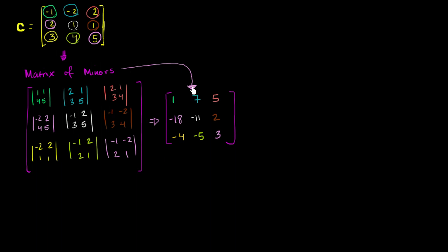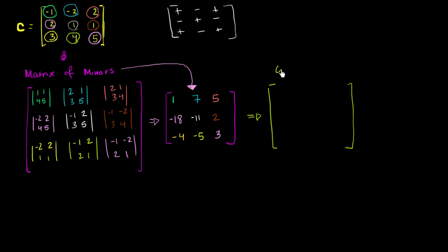That's our matrix of minors. From there we get our cofactor matrix by applying a checkerboard sign pattern: positive, negative, positive, negative, positive, negative, positive, negative, positive. Applying these signs: 1 stays positive 1; 7 becomes negative 7; 5 stays positive 5; negative 18 times negative gives positive 18; negative 11 times positive stays negative 11; positive 2 times negative gives negative 2.